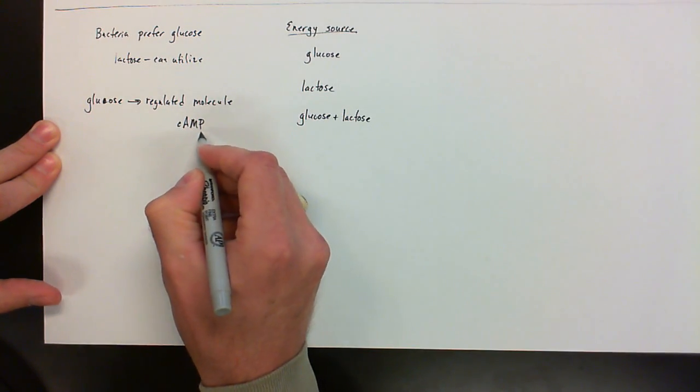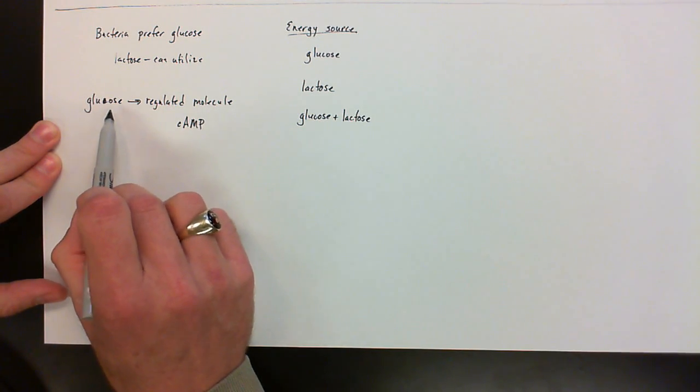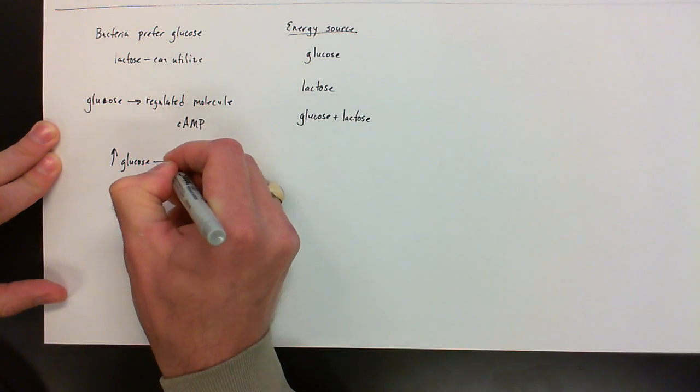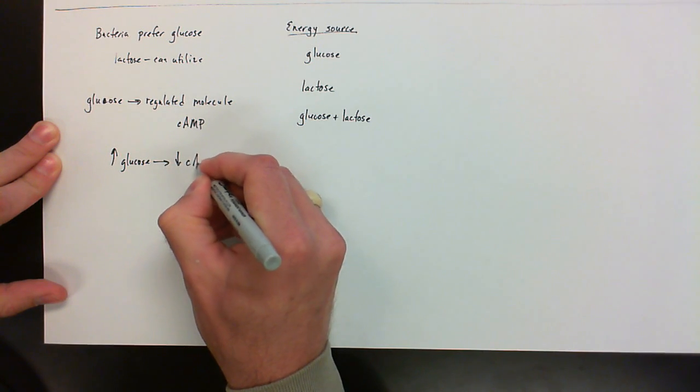That's called cyclic adenosine monophosphate. So what this is doing, when there is a high level of glucose, when we have an increased level of glucose, what we're going to see is in the cell there's going to be a low level of cyclic AMP.